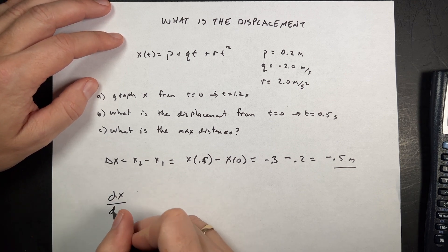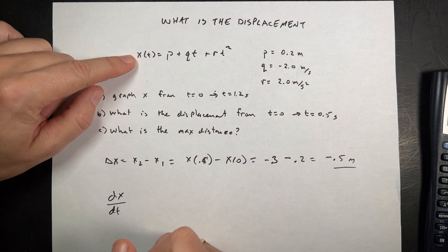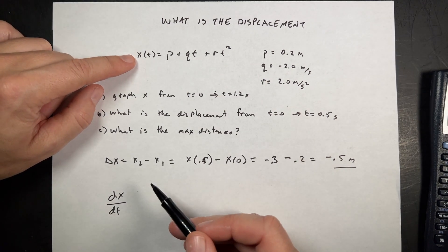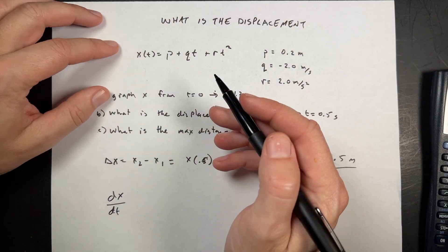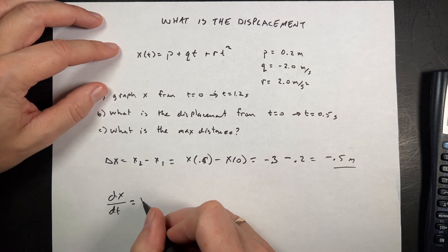Because the maximum displacement will be when the velocity is equal to 0, right? Because if it's moving away and then it stops to move back towards it, that's the furthest it got.